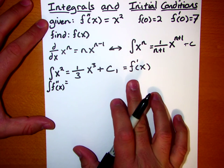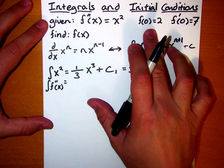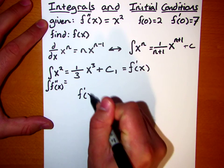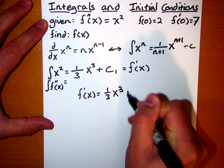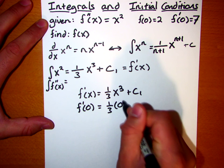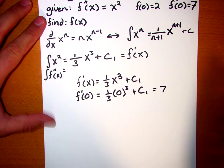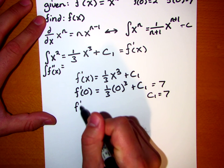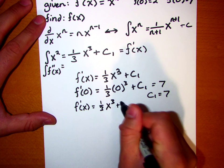Okay, so we have this expression for f prime of x, but we have this unknown constant c1 at this point. Well, this is where the initial conditions come in. Let's take a look. f prime of 0 equals 7. So f prime of x is equal to 1 third x cubed plus c1. So f prime of 0 is equal to 1 third times 0 cubed plus c1. And we know, given the initial conditions, that this is equal to 7. So right away here, we can see that c1 is equal to 7. And therefore, f prime of x is equal to 1 third x cubed plus 7.